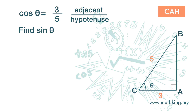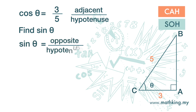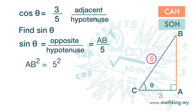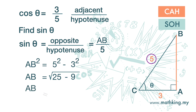We want to find sine theta. Sine — SOH — is opposite over hypotenuse. We can see from the diagram that opposite is AB, while hypotenuse is 5. We do not know AB, but we can find AB using Pythagoras theorem. AB squared is 5 squared minus 3 squared, so AB is square root of 25 minus 9, and AB is 4.